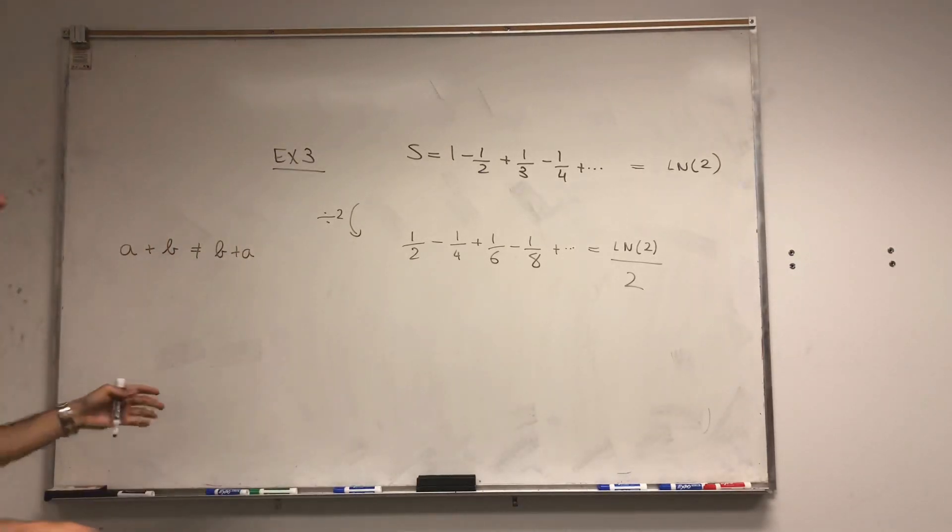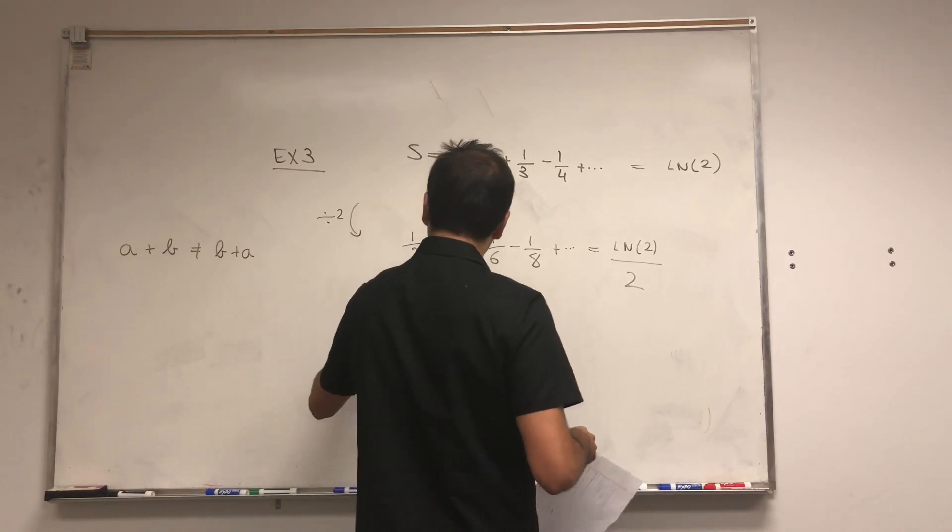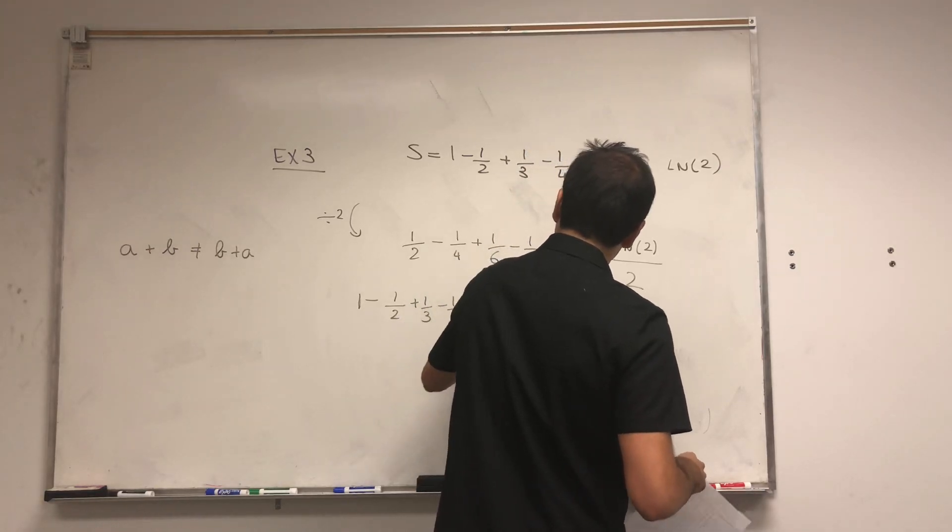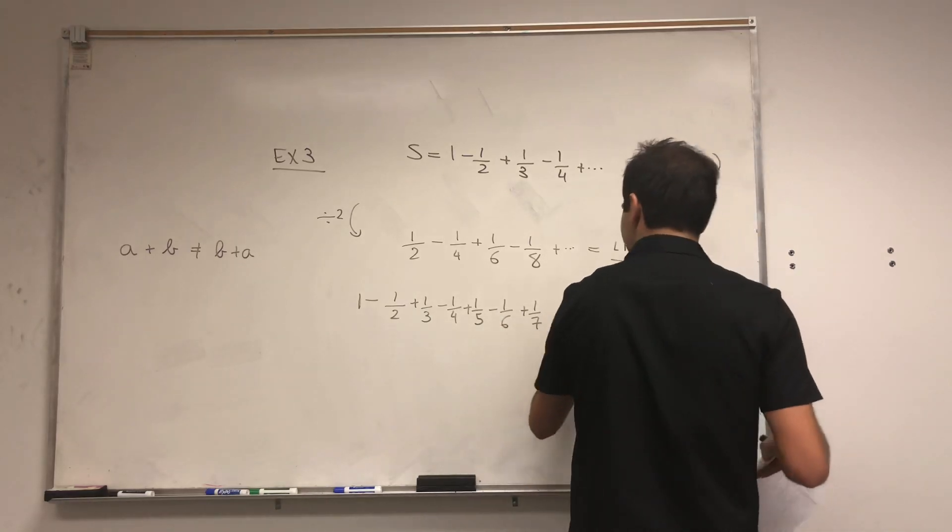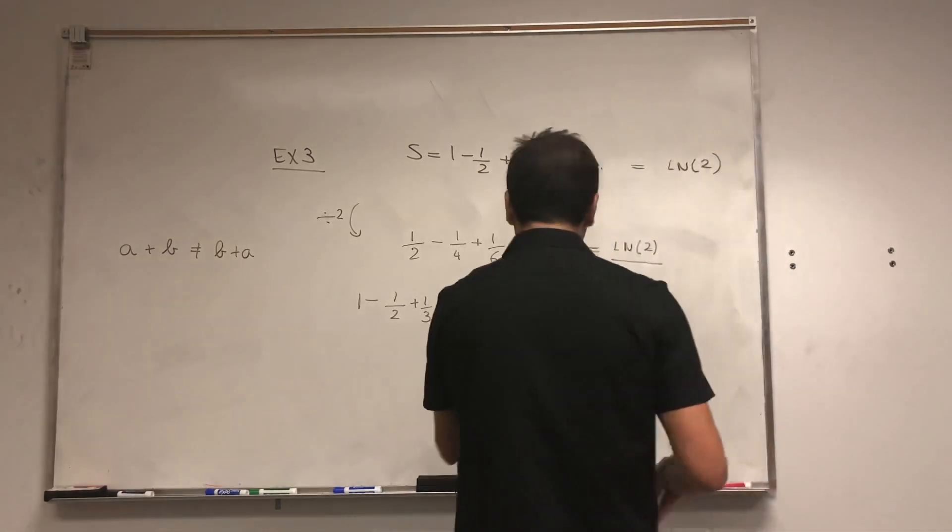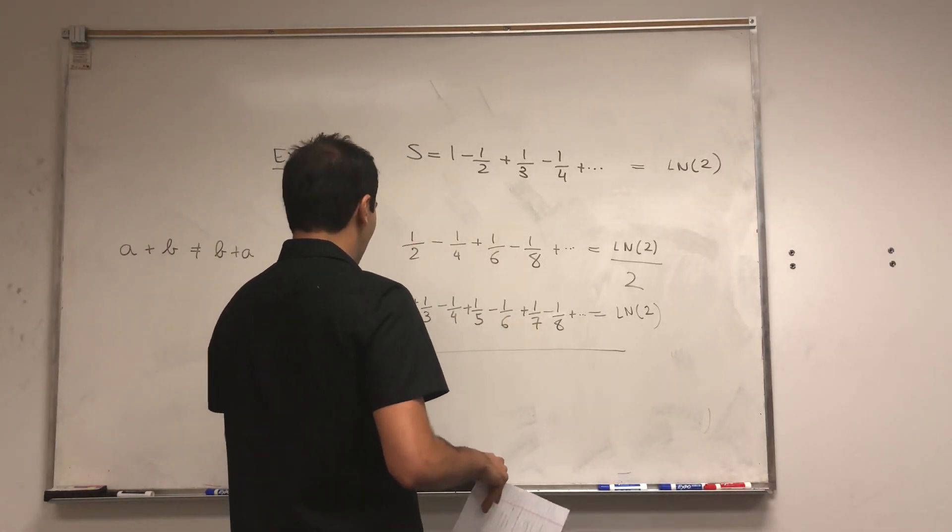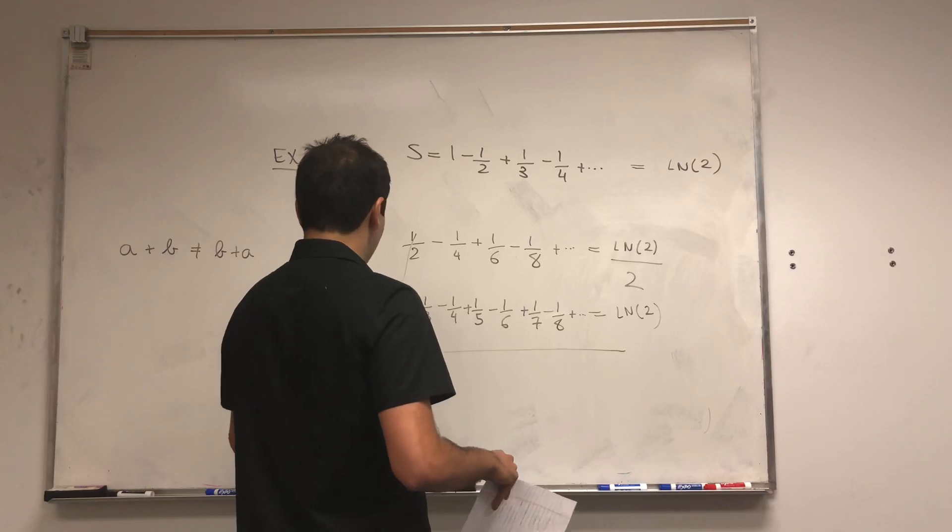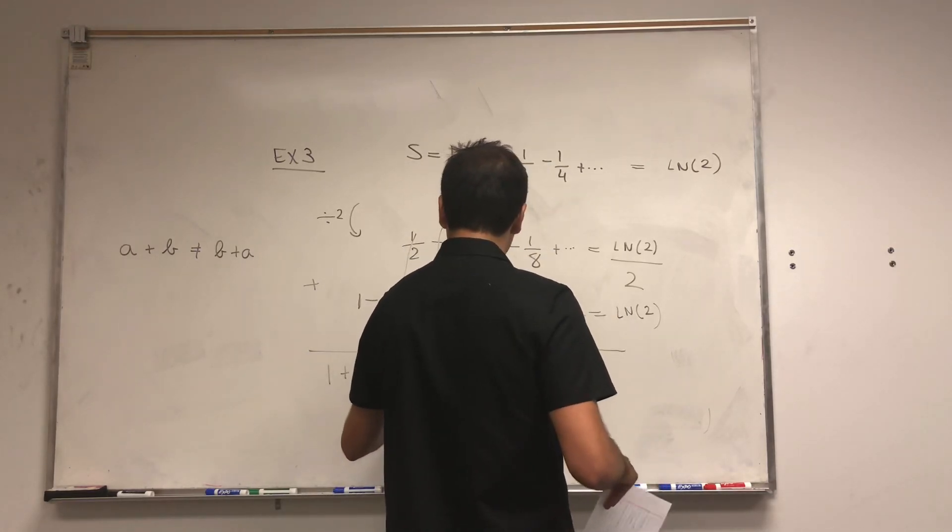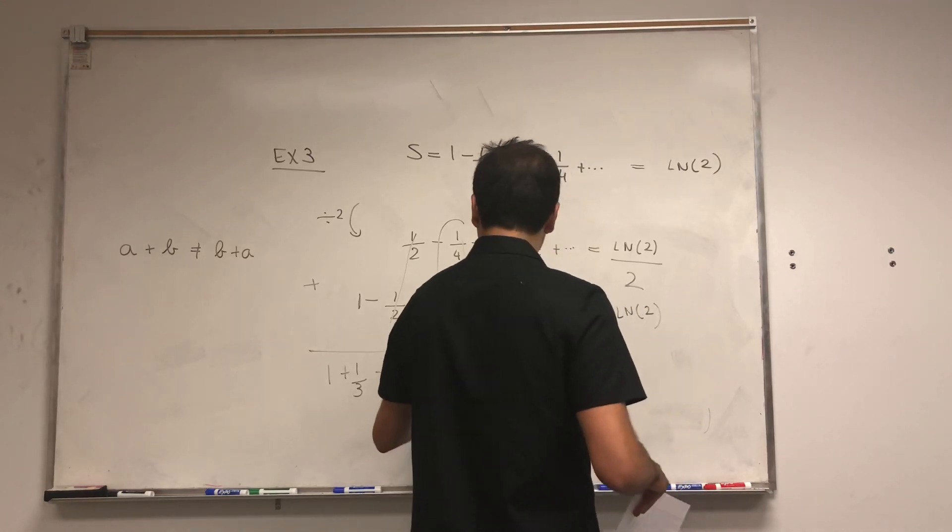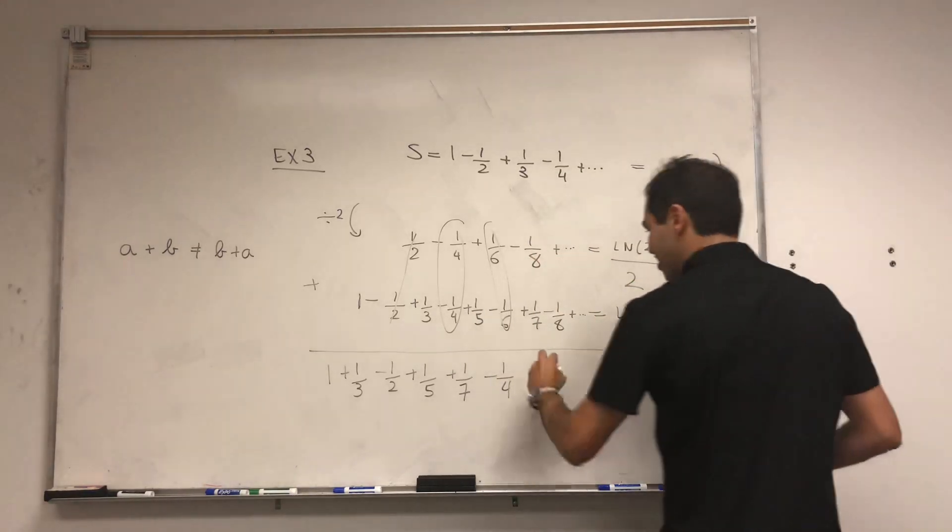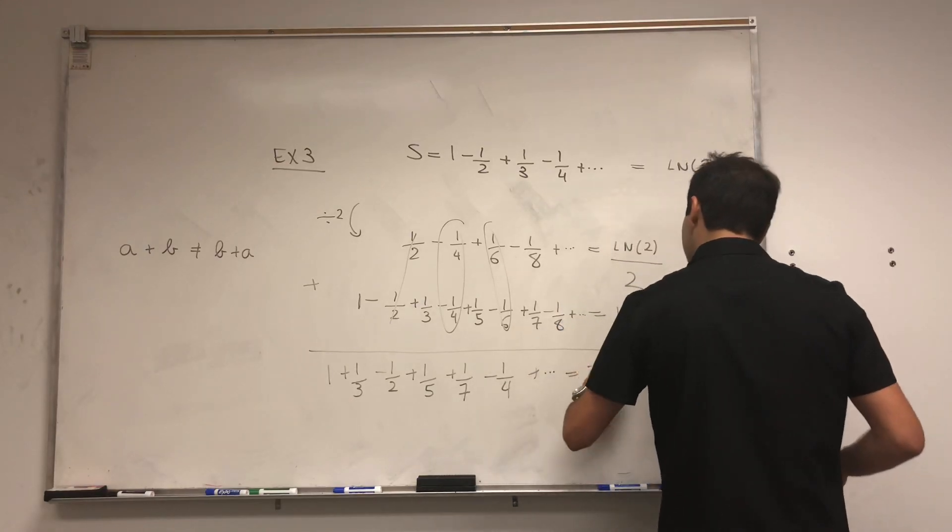On the other hand, consider our original series. So 1 minus 1 half plus 1 third minus 1 quarter plus 1 fifth minus 1 sixth plus 1 seventh, et cetera. So that's equal to ln of 2. And now, add both of them up, and you get 1, this disappears, plus 1 third minus 1 quarter minus 1 quarter, it's minus 1 half, and then plus 1 fifth, this 1 sixth disappears, plus 1 seventh, and then minus 1 eighth, minus 1 fourth, and then plus 1 ninth, et cetera, equals to 3 ln of 2 over 2.